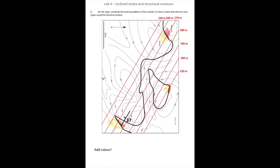After removing the construction points to make the map cleaner, we can add colour. We know which side of the contact each rock type would be on based on the original mapping. This completes our map, showing where both rock types — the mudstone and breccia — would occur across the entire map area.